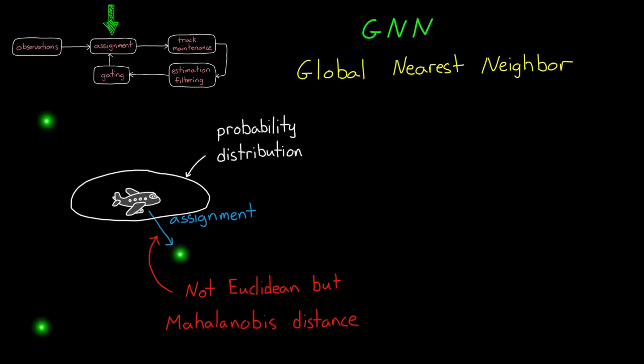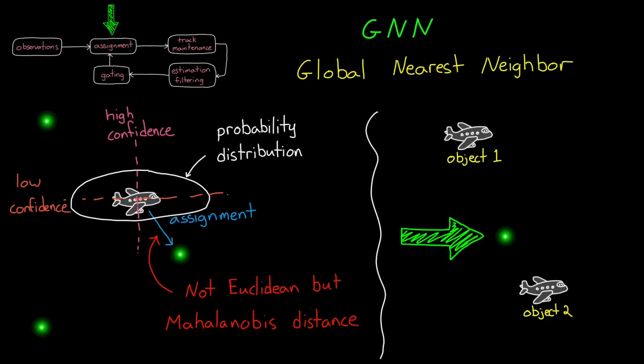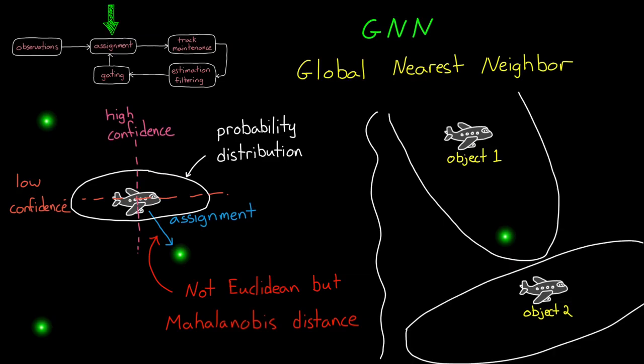With a probability distribution like we have with both our predictions and our measurements, the lowest Euclidean distance doesn't always indicate that a prediction and a measurement are the best fit. This is because we have more confidence in our predictions and measurements in the directions with lower standard deviations. For example, in this simple image, we have a prediction for the location of two different objects and a single detection that lies between them. If we used Euclidean distance, we'd assume that the detection is of object 2 since it's closer. But if we look at the probability distributions of the two predictions, then we can see that it's more probable that the detection is of object 1.